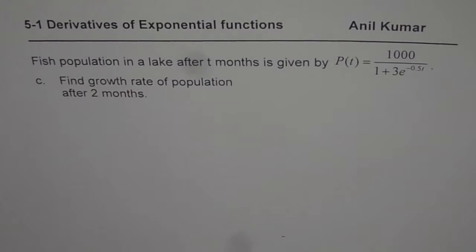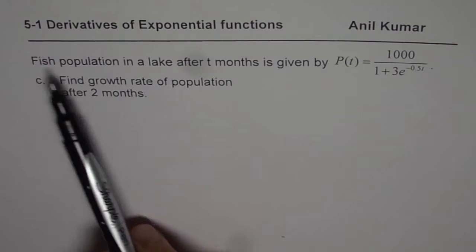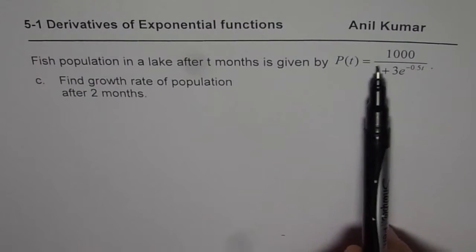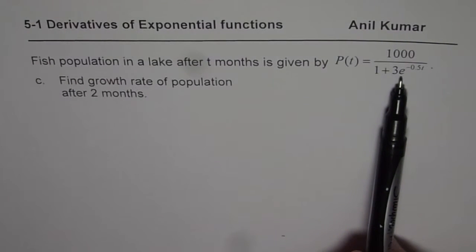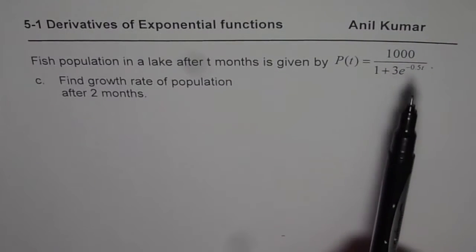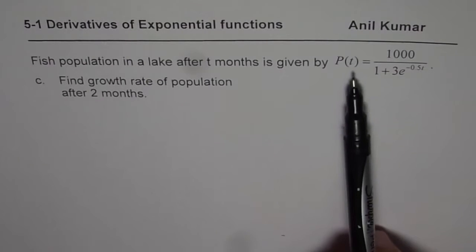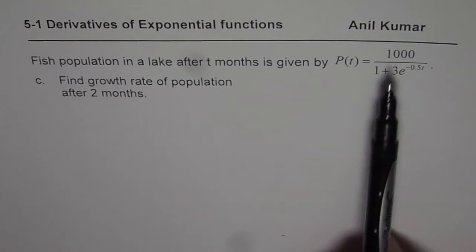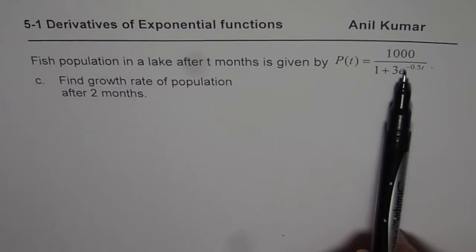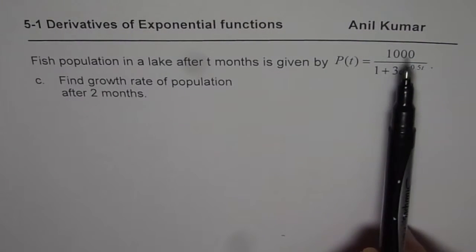I am Anil Kumar. We are trying to understand how to work with exponential equations, find their derivatives and second derivatives. The example we have considered is that fish population in a lake after t months is given by p of t equals 1000 divided by 1 plus 3 times e to the power of minus 0.5t. In parts a and b, we found how many fish there are to start with, and we also found the time taken for the population to be 75% of its maximum capacity.